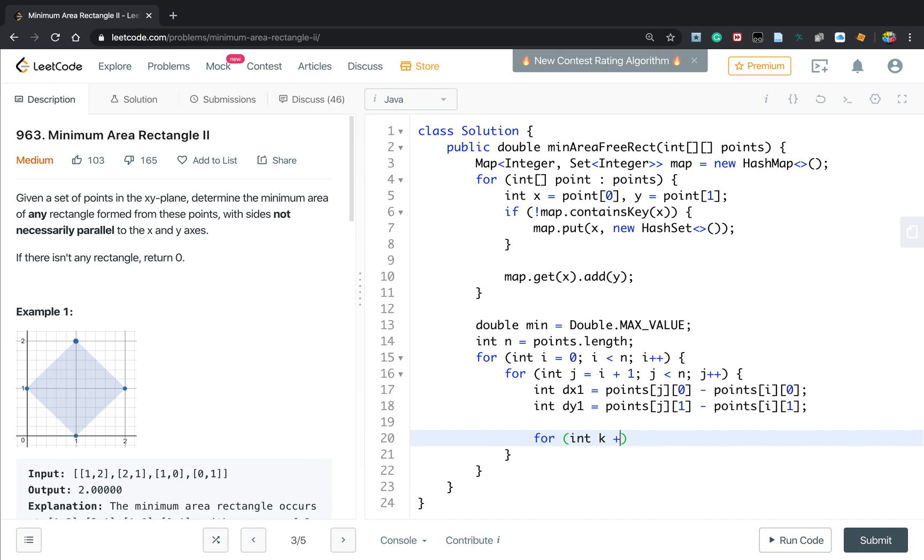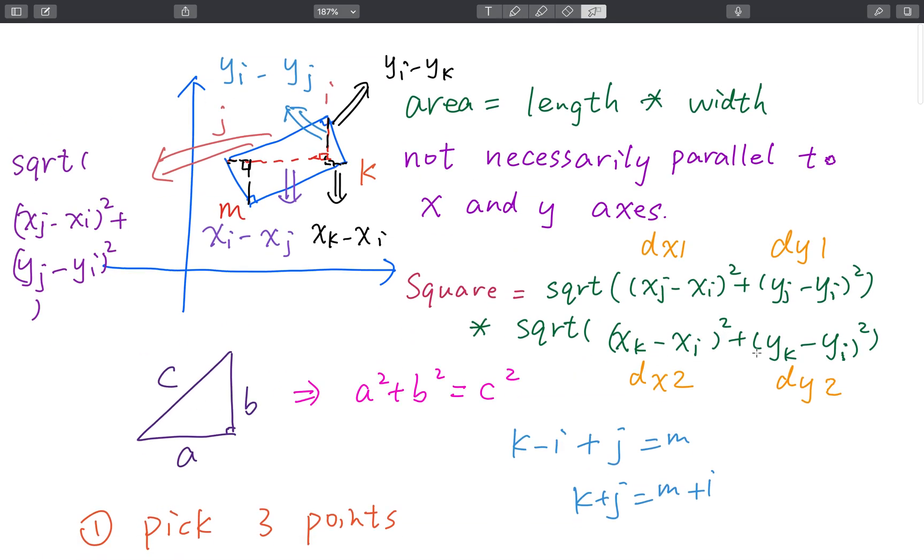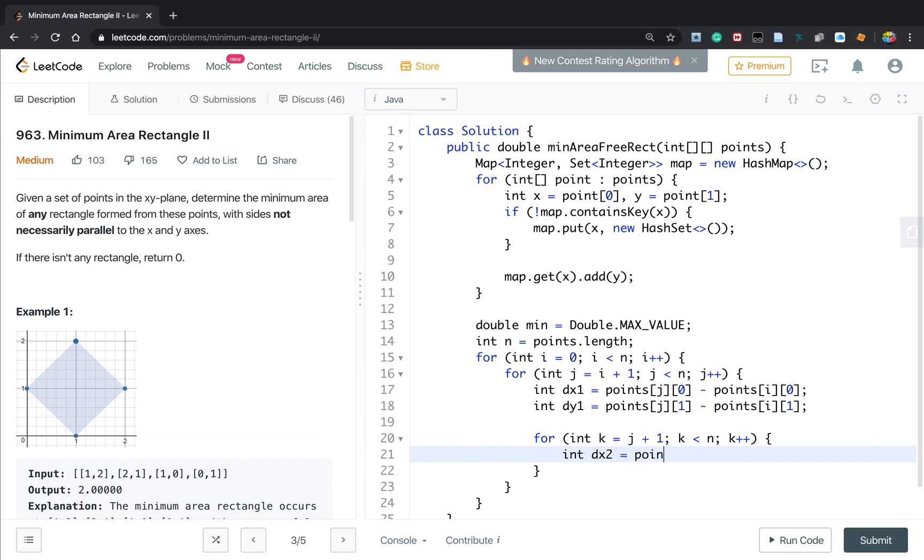Then we try to get the third point, which is j plus 1, k less than n, k plus plus. So we can get dx2, which will be points k0 minus points i0. Dy2 will equal to points k1 minus points i1.